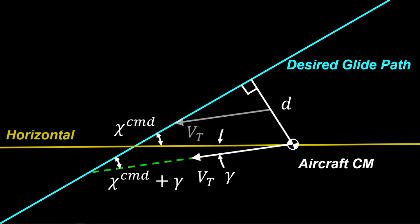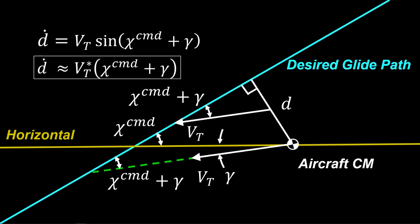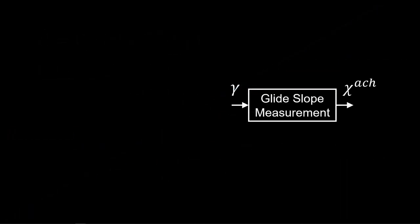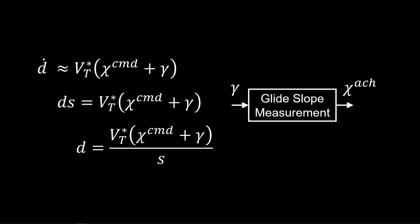With VT as a hypotenuse, we have a similar triangle with a desired glide path, so that D-dot is simply VT times the sine of chi command plus gamma. To linearize, a small angle approximation with the trimmed airspeed produces the formula. A Laplace transform gives us the relationship between D and the flight path angle.